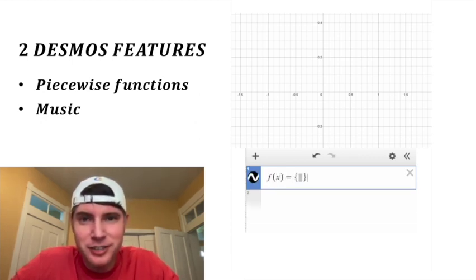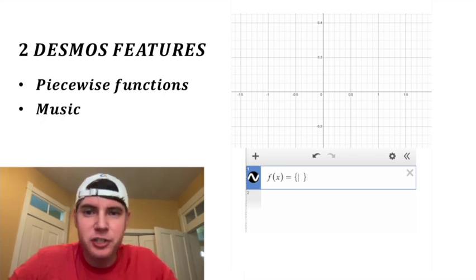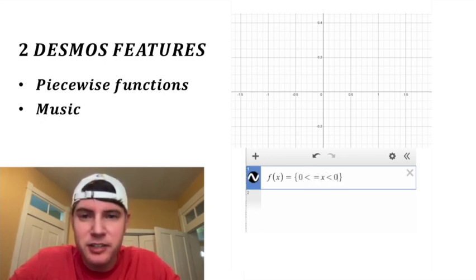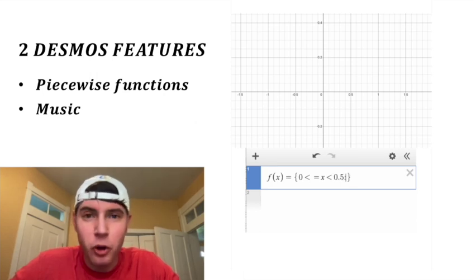Then first you type the domain restrictions. You'll say zero is less than or equal to x is less than 0.5, then you put in a colon and then you put in your function. In this case...